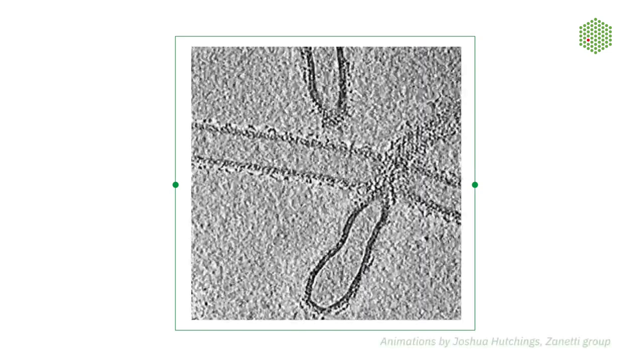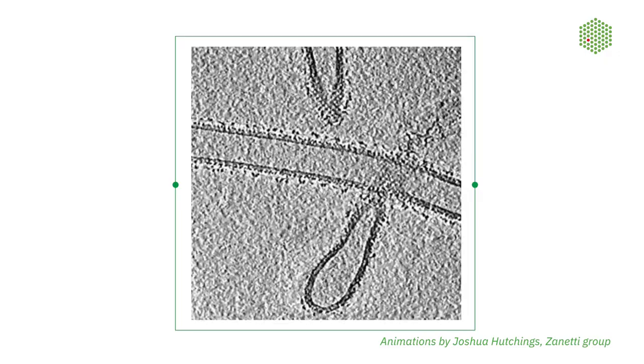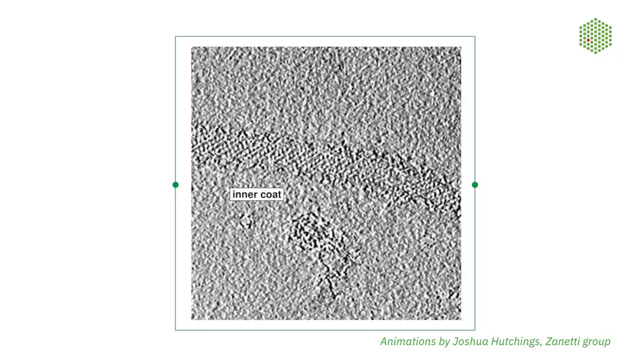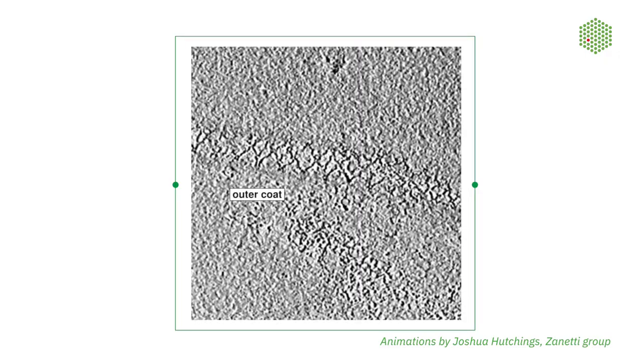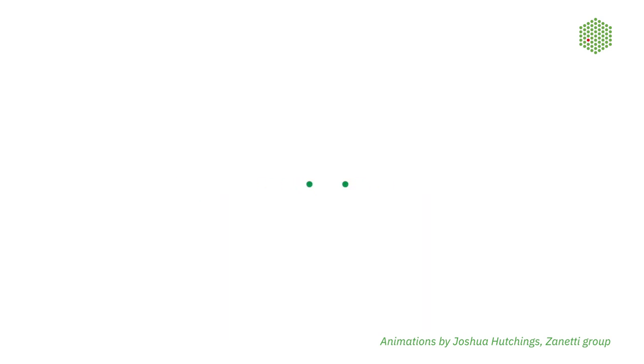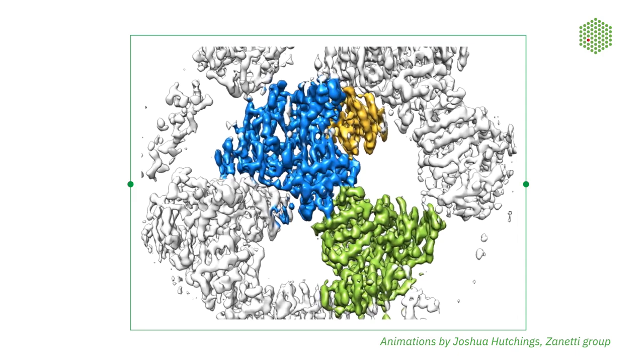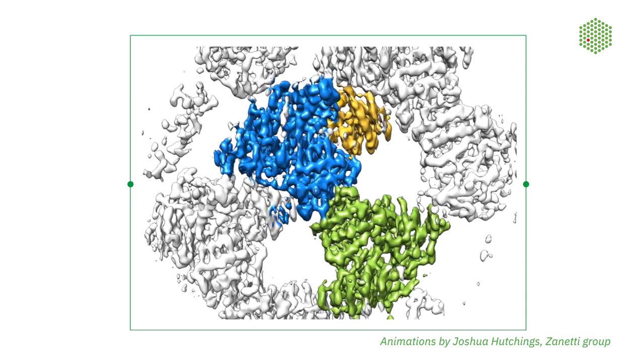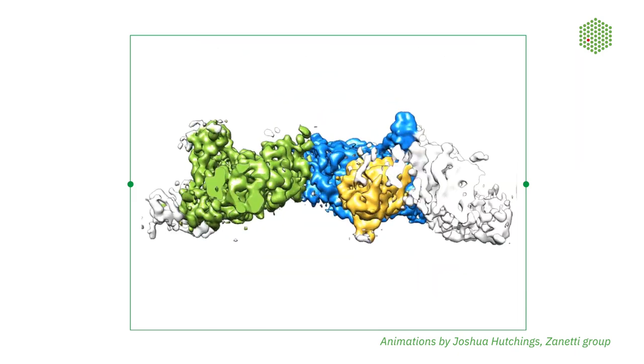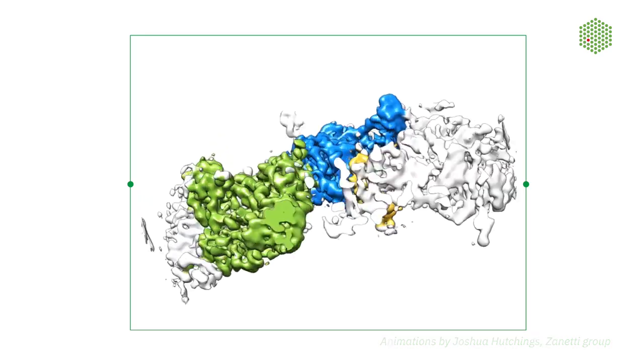Code proteins play a key role in the packaging and distribution of proteins within our cells. In my group we study specifically the COP2 code protein complex. Understanding how these proteins work will help us to understand their role in health and disease. Defects in COP2 can lead to pathologies related to collagen secretion and lipid metabolism disorders.